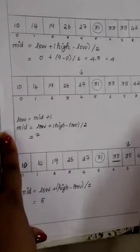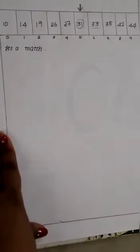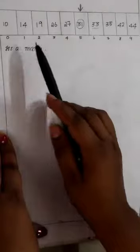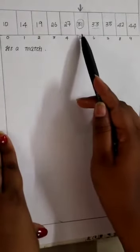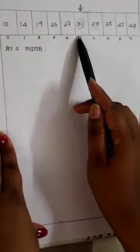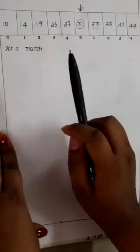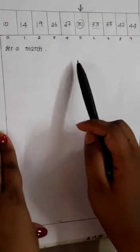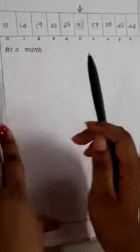When we calculate the mid again, this time it is 5. We compare the value stored at location 5, which is 31, and we find that it is a match. So we come to a conclusion that the target value 31 is stored at location 5.